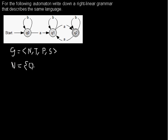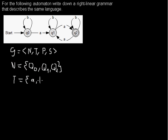So in this case, we have one non-terminal q0 for the initial state, q1 for that state, and q2 for the last state, and we don't need anything else besides that. The terminals are just the input symbols that you can see at the arcs, so we just have a and b. And the start symbol is just the same as the initial state in our automaton, so in this case it's q0.